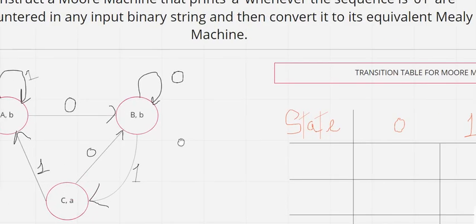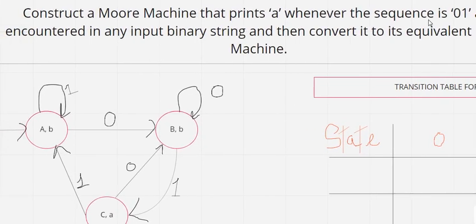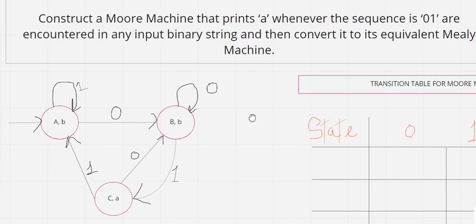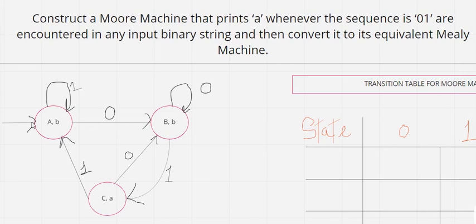What it says is that on seeing the sequence zero-one it will print 'a' as output. The initial state is A. From A there is a transition on zero and then one, entering state C, which prints output 'a'. All other states will have output 'b', because 'a' as output directly justifies that C is the final accepting state for the string zero-one.